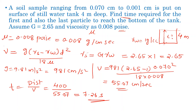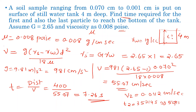Next, for the 0.001 cm particle, using the same Stokes' law formula, the settling velocity comes out to approximately 0.012 cm/s. The time for this particle to reach the bottom is approximately 5.95 minutes, or 3571.4 seconds, using time = distance divided by velocity.